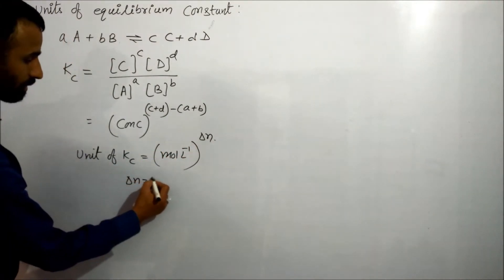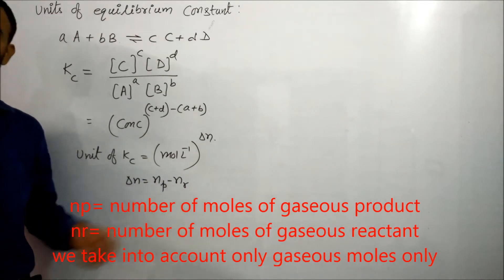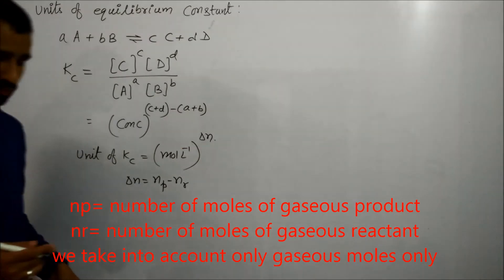Delta N equal to number of moles of product minus number of moles of reactant.